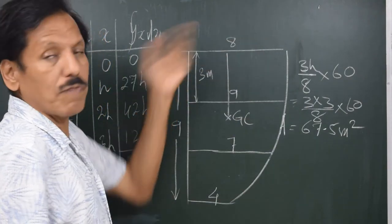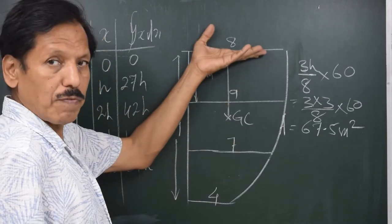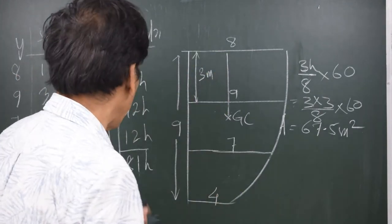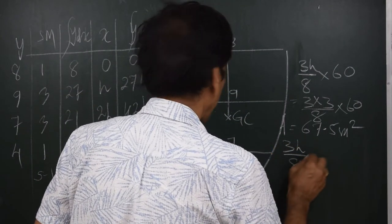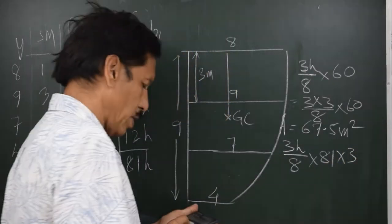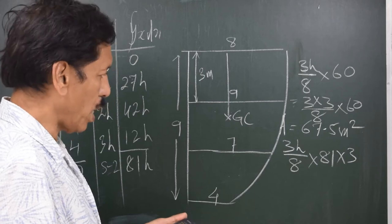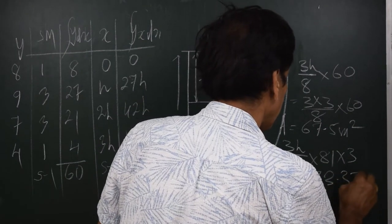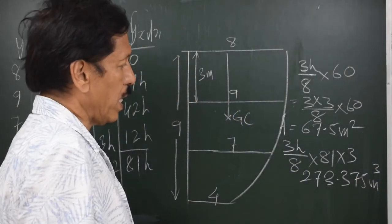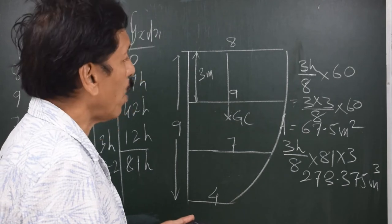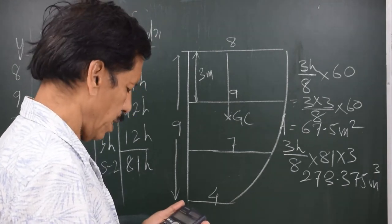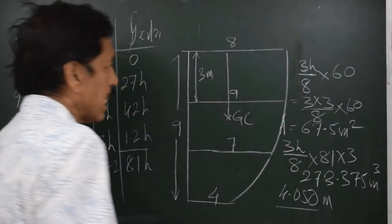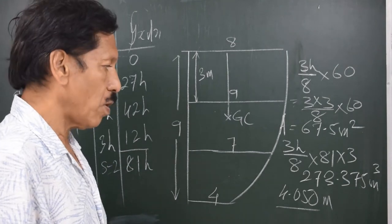To find the centroid, we calculate the moment of the entire area about the first ordinate: (3h/8) × 81h = (3×3/8) × (81×3) = 27×81/8 = 273.375 cubic meters. Dividing by the area of 67.5 square meters gives 4.05 meters — the distance of the geometric centroid from the first ordinate.